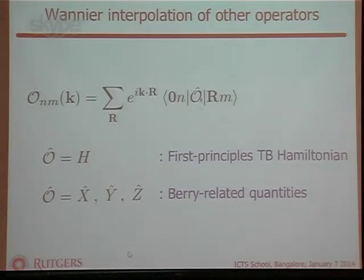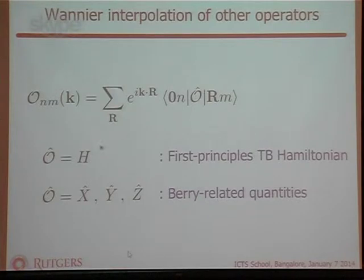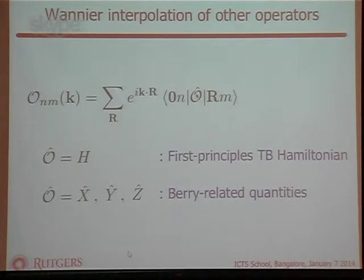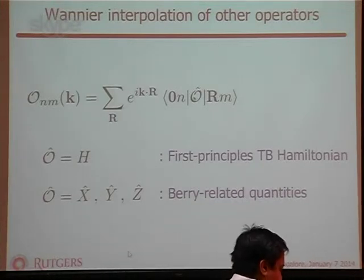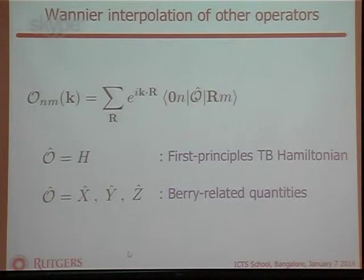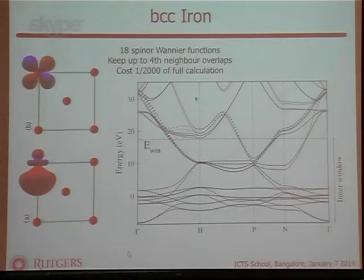What I just showed is Wannier interpolation when the operator is the Hamiltonian — the Wannier function in the home cell, the Wannier function in cell R, with the Hamiltonian operator giving Hamiltonian matrices in k-space via the Fourier transform. But sometimes we'd like to put other operators here: magnetic moments, dipole moments, or position operators x, y, and z, which will play a special role later in the talk.